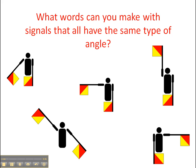Here are some examples of a diagram using these flag signals. The question on our page 244 in our textbook is: what words can you make with signals that all have the same type of angle? You'll notice here that this is a right angle, so that's the same kind of angle as this one here - another right angle.